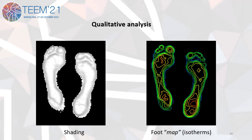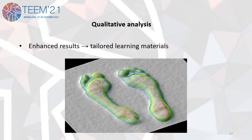Of course, this methodology also enhances qualitative analysis, and it is possible to apply visualization such as this example of shading shown on the left. And complementarily, by means of typical cartographic operations, a set of 3D isotherms can be generated to create a so-called foot map, which allows a quick interpretation of the transverse and longitudinal arches. Both products can be combined by means of the same visualization software for a combined result.